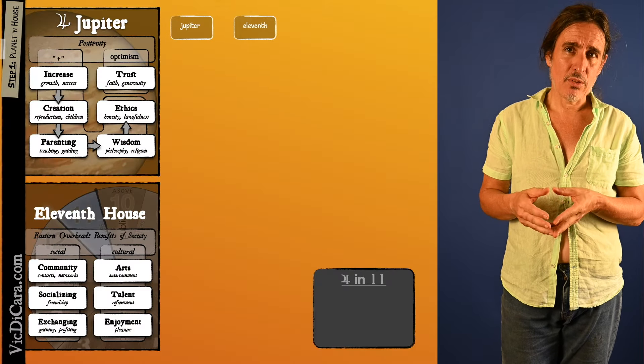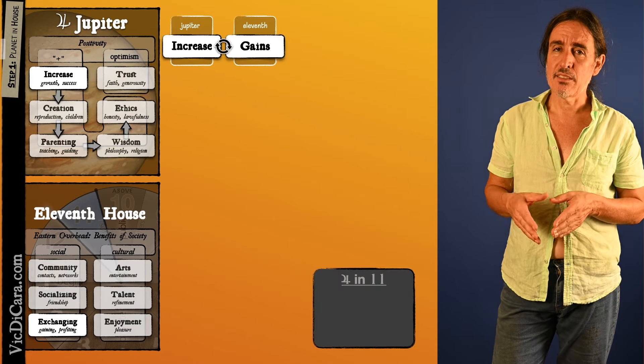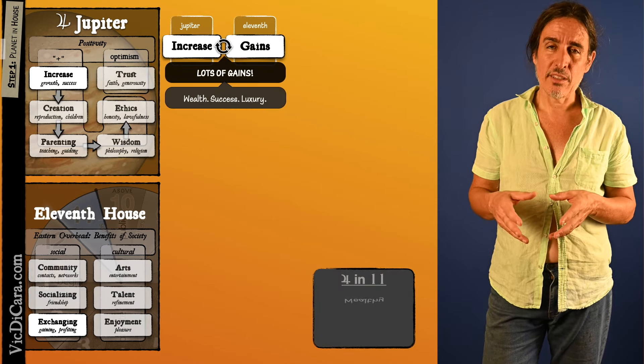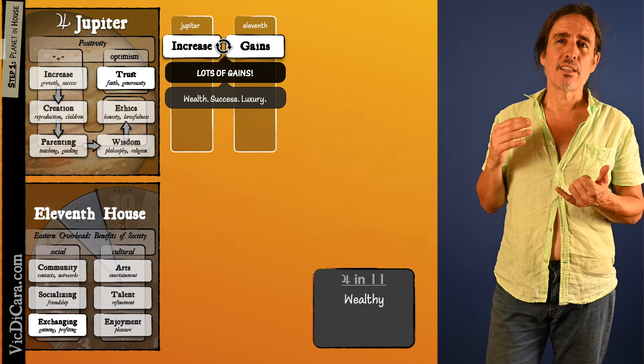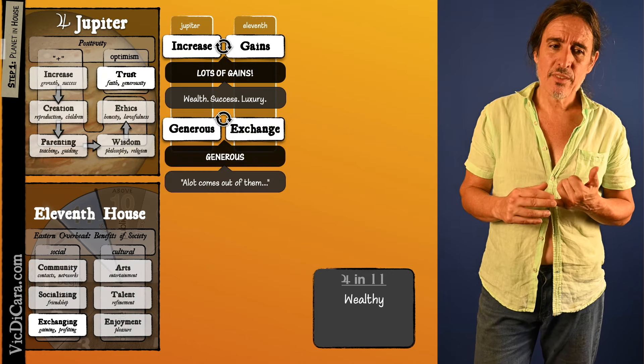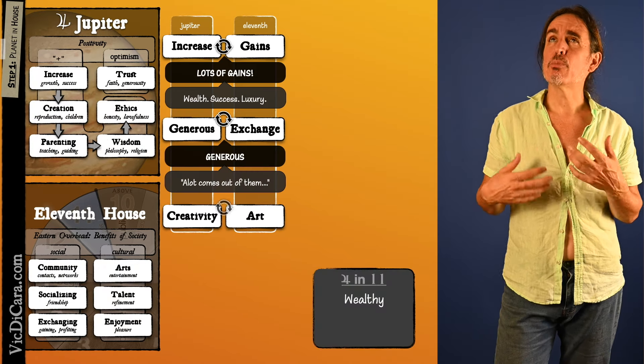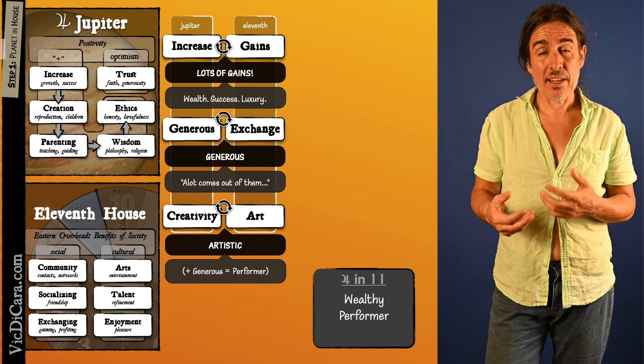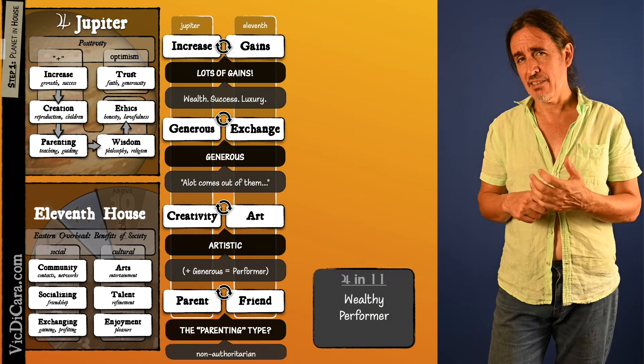So to get started with this process, step one: what does Jupiter in the 11th house symbolize? That is what episode one of this series was all about. I'll put a link to it in the description if you want to look at the details and make sure you get all the nuances of it. But to summarize, Jupiter in the 11th house symbolizes wealthiness, performer-ness like tending to perform or liking to perform and having skill in performing, and also non-authoritarianism.